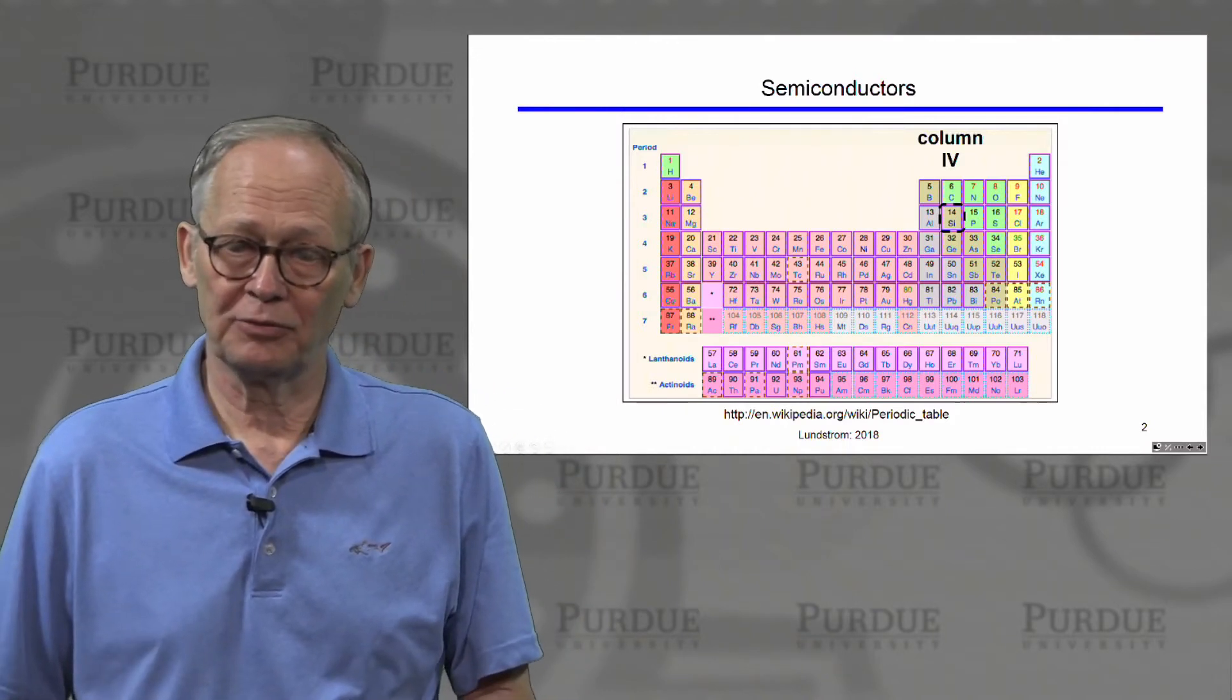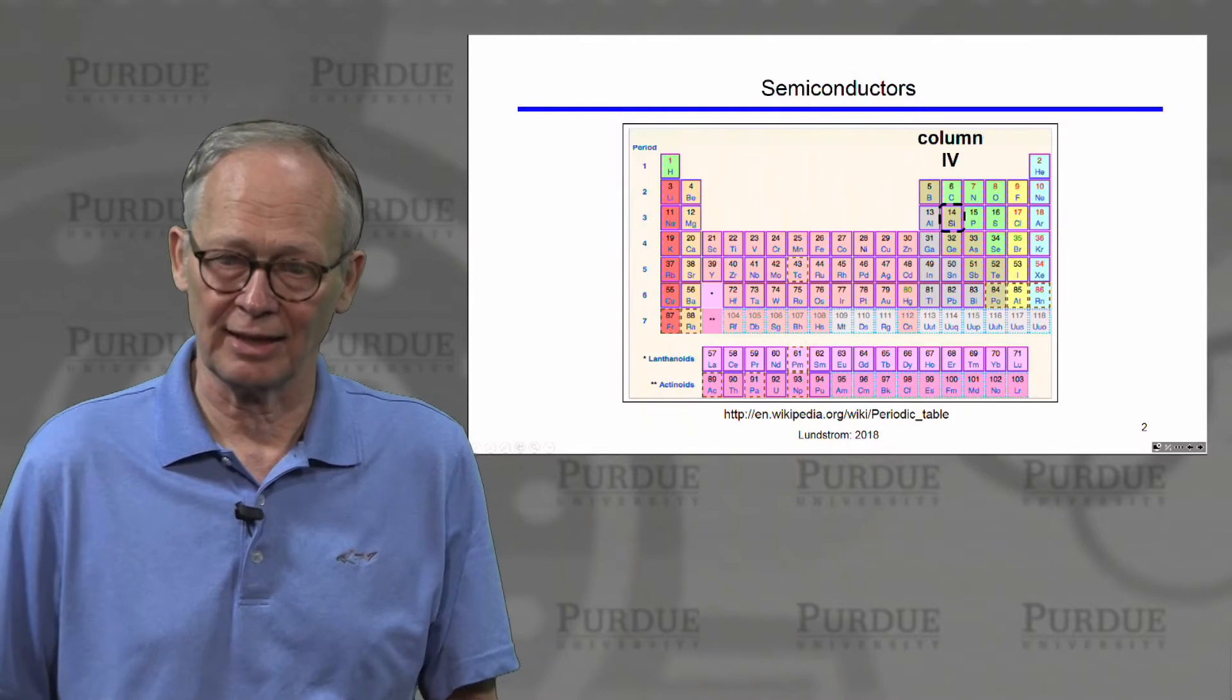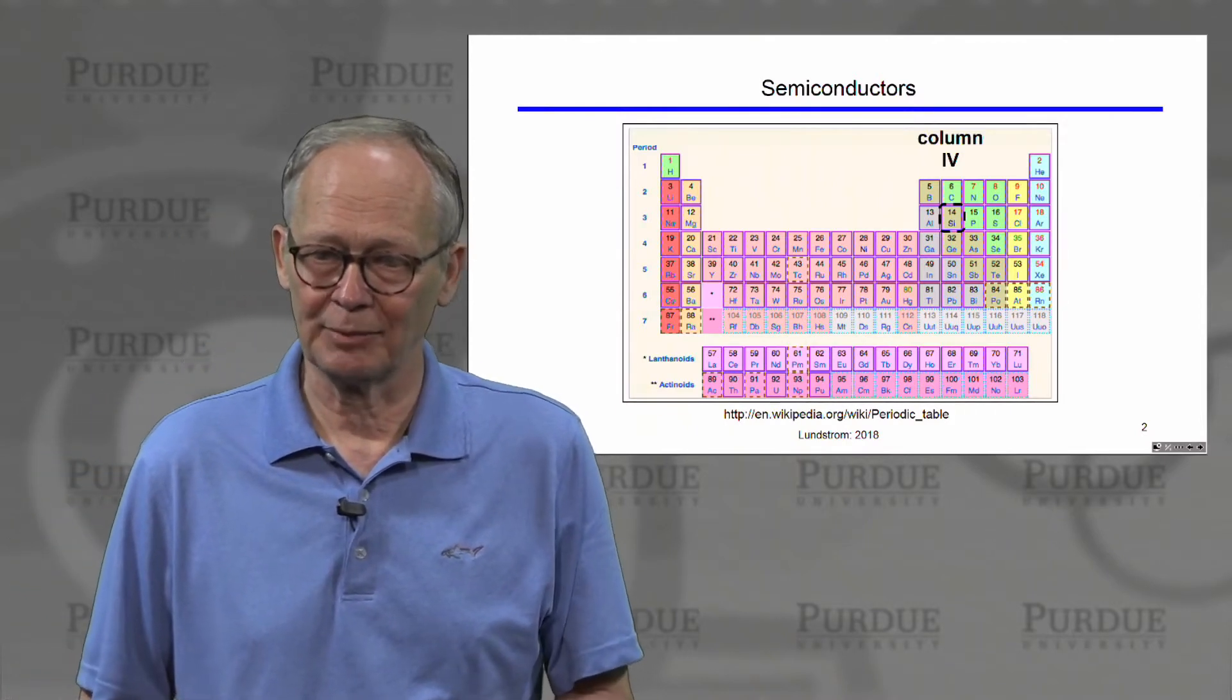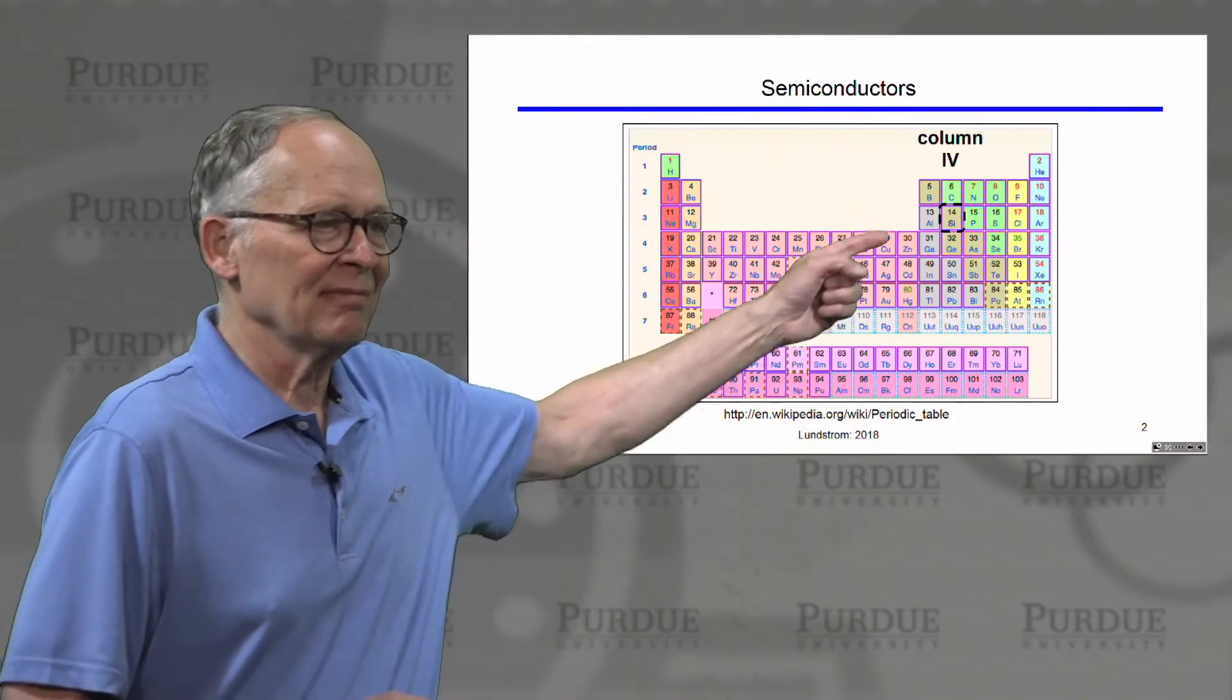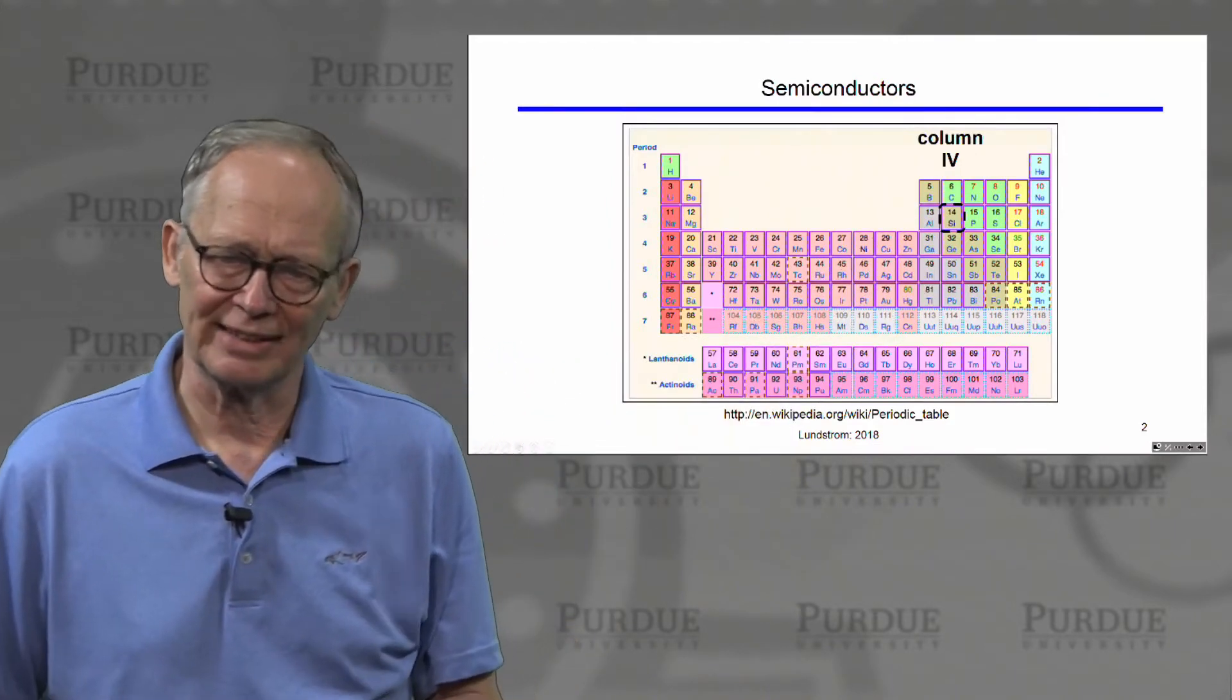So silicon is in column four, it's the most common semiconductor. You can also see that germanium is in column four, it's also a common semiconductor. Carbon, we would not really consider a semiconductor because its band gap is so wide, we think of it more as an insulator.